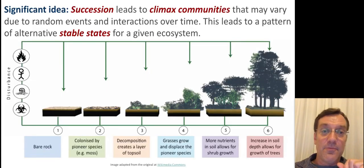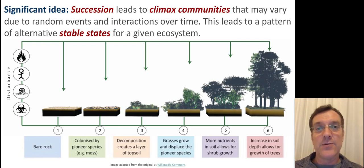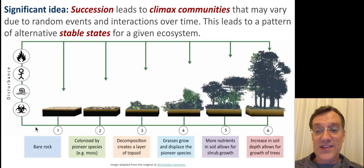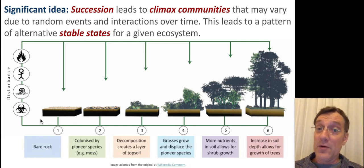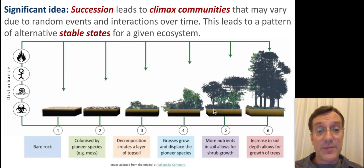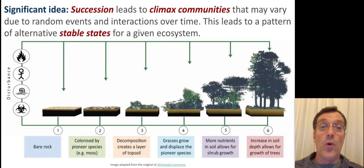Succession is a big idea in ESS — you're going to find succession in some way, shape, or form in pretty much every single IB ESS exam every year. Succession is a change in the ecological community of organisms from bare rock, where there's no soil, through varying stages of development, up until you have a climax community, which is that stable state or dynamic equilibrium we first encountered in Topic 1.3.